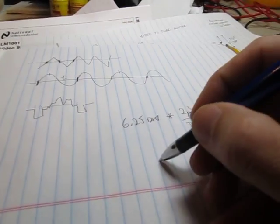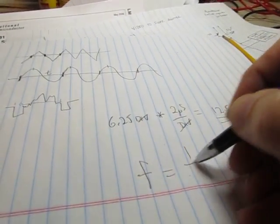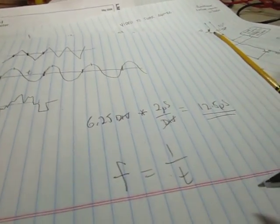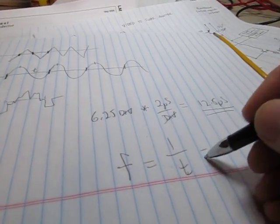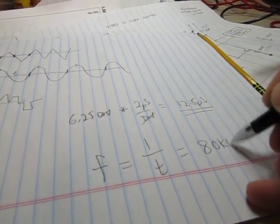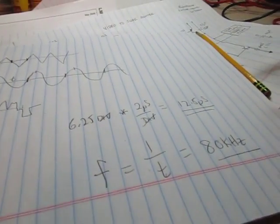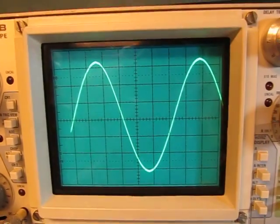So now the formula for frequency is really simple. Frequency is equal to 1 over the period. So 1 over 12.5 microseconds is equal to 80 kilohertz. So that tells me that this frequency of this signal is 80 kilohertz.